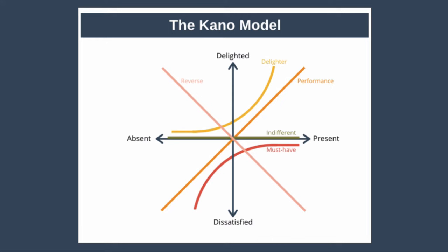Next we have indifferent features, represented by the green line that runs along the x-axis. These are features that the customer just doesn't care about — whether they're present or absent, your customer simply doesn't care. In our hotel example, that might be something like having a rug in your room: if it's absent you don't even notice, and if it's present you don't really notice it either. Finally, we have reverse features — features that actually annoy your customer if they're present but make your customer happy when they're not there, which is why this line runs in the opposite direction to the performance line. In our hotel example, having to queue at the restaurant before being seated is annoying; far better to simply walk in and select your own table.